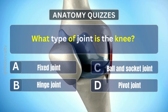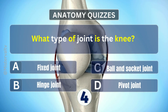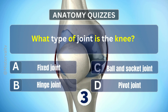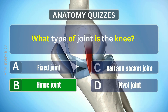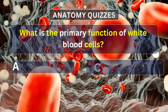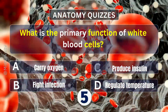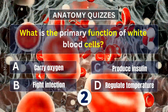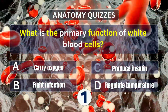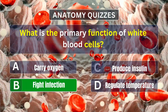What type of joint is the knee? Answer. B. Hinge joint. What is the primary function of white blood cells? Answer. B. Fight infection.